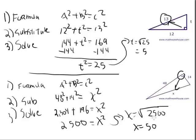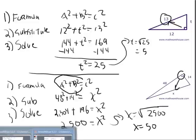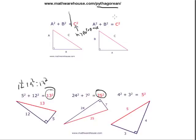These are the three steps to solve any Pythagorean Theorem problem: write out the formula, substitute, then solve. Remember, the order of a and b doesn't matter — 14 squared plus 48 squared or 48 squared plus 14 squared both give the same result since order doesn't matter when adding. If you'd like more practice problems, visit mathwarehouse.com/pythagorean — there's also a worksheet with an answer key there. Thank you.